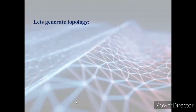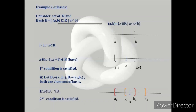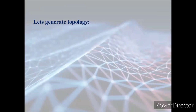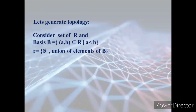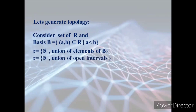Now let's generate the topology. Since the basis conditions are fulfilled, the topology τ consists of the empty set and all unions of open intervals. Open intervals can be combined — for example (1,5) union (2,3), or infinite unions — and the union of open intervals is also open, so we can take all such unions.